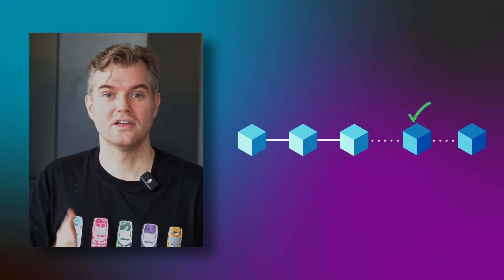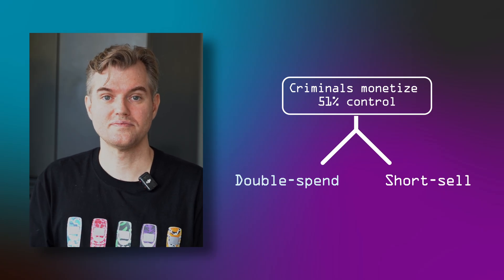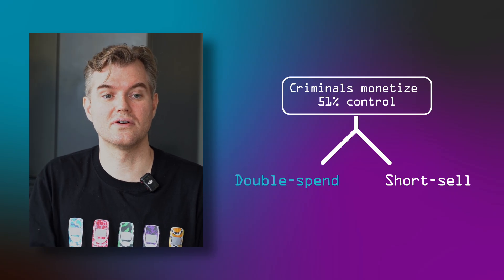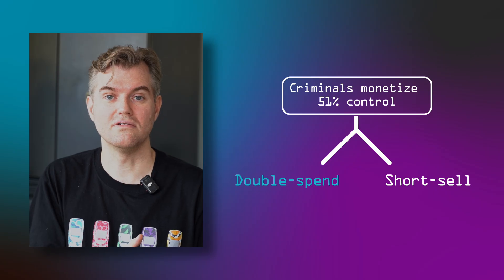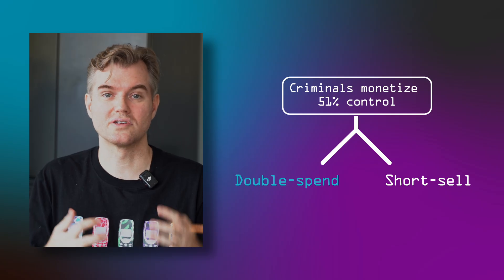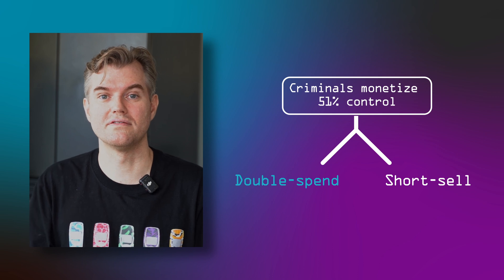There are two ways to exploit this. Either you spend some of your own tokens while you withhold information, and then you do not report the transaction in which you spent your tokens. As soon as you announce your alternate reality, the coins are back to you. Maybe you traded them for another coin, or there was a real-world transaction where somebody gave you real goods. You hold on to those benefits but get the coins back — so you can double-spend. That's the obvious way to use a 51% attack to gain benefits.